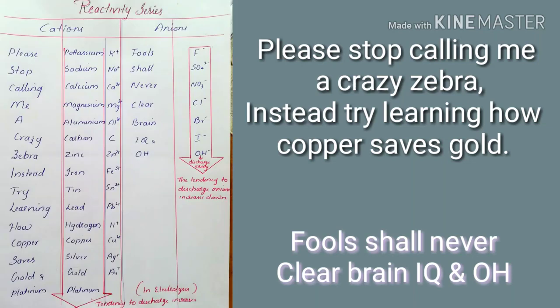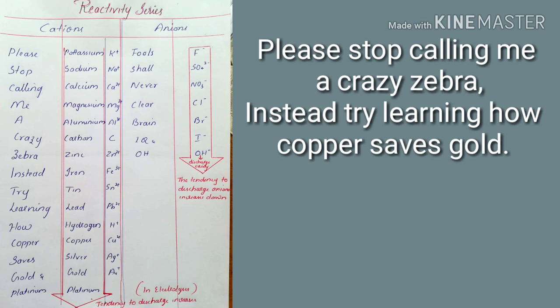Hi students, here is the shortcut or trick or tip to learn the reactivity series of metals and the anions. So the metals or the cations you can learn with the mnemonic: 'Please stop calling me a crazy zebra. Instead, try learning how copper saves gold and platinum.'